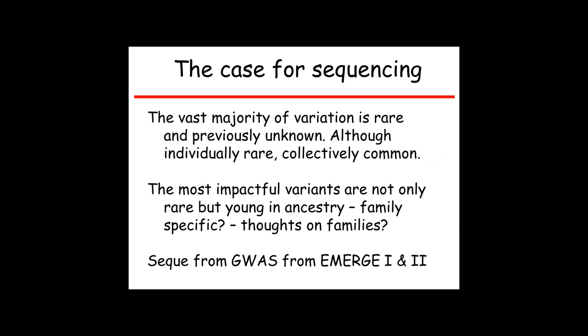The case for sequencing: the majority of variants are rare, but they can be collectively common. The most impactful are not only rare but also young in ancestry — maybe even family-specific. When we talk about family history, is there some way to bring families into the study? I think that sequencing is the perfect segue from eMERGE-1 and 2 into 3. Sequencing is not the only way, but expanding the dataset across the genome would be very important.